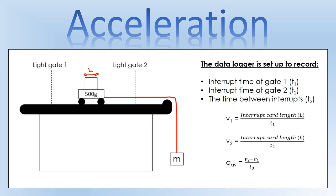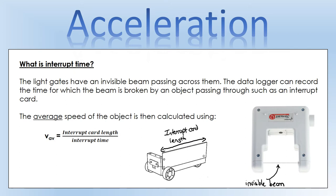A light gate is capable of measuring time. The measurements we're going to take in the experiment are: interrupt time at gate one, interrupt time at gate two, and the time between interrupts — how long it takes to go from one light gate to the other. A data logger is going to do all of that for us. From that we'll figure out the speed at each gate and then the average acceleration over that period.